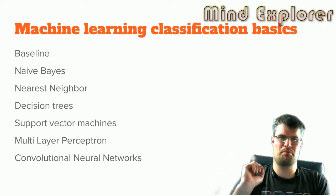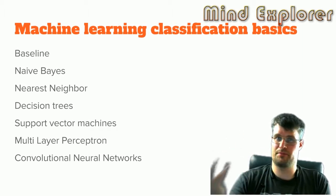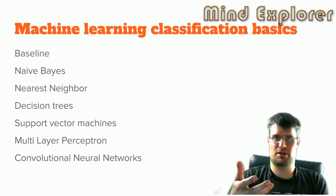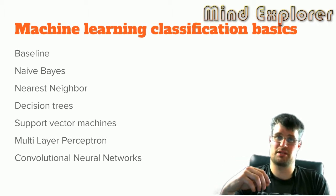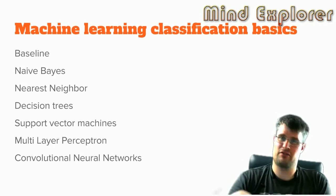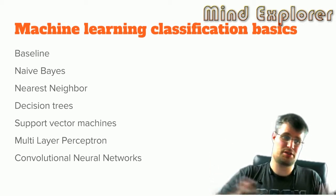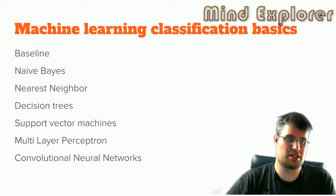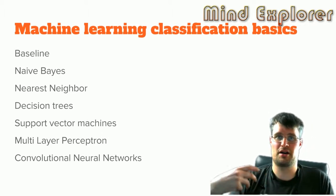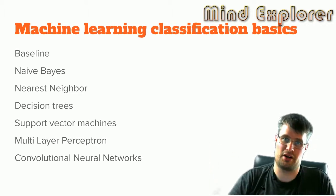First off I'm going to talk about a few baseline machine learning methods or algorithms — they are very simple but good to know about. Then I'm going to talk about Naive Bayes, which is a very well-known method and also very naive, as the name implies. Then we have nearest neighbor, decision tree, support vector machines, multilayer perceptrons, and lastly convolutional neural networks — the kind of networks you build inside TensorFlow and other machine learning frameworks.